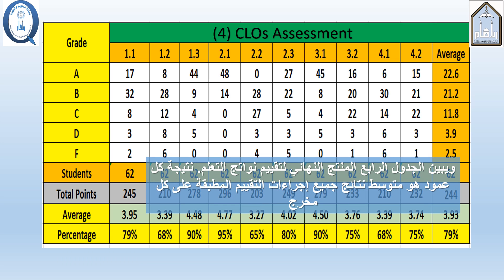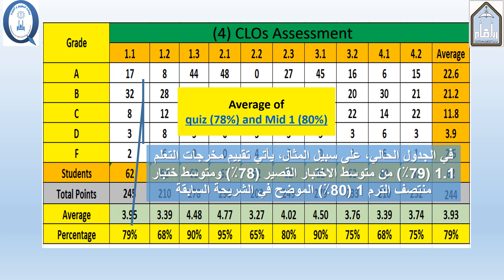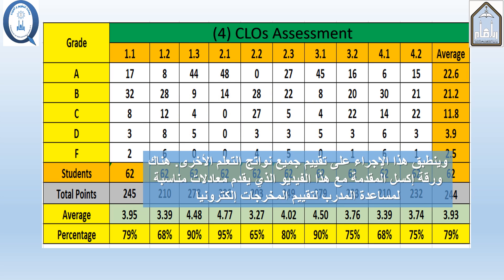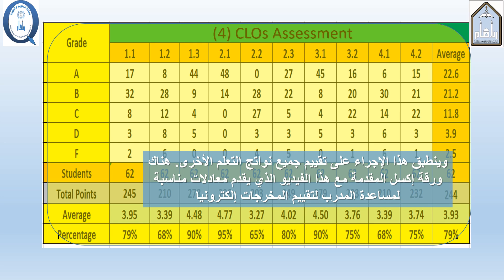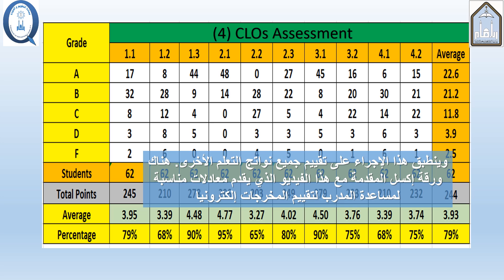The fourth table shows the final product of CLO assessment. The result of each column is the average of the results of all assessment procedures applied to each domain. For example, the assessment of learning outcome 1.1 comes from the average of the quiz 78% and mid one 80% shown in the previous slide. This procedure applies to all other learning outcomes. There is an Excel sheet provided with this video that offers proper equations to help the instructor do the calculation electronically.